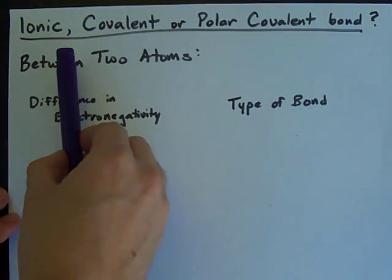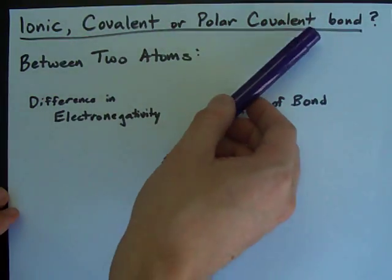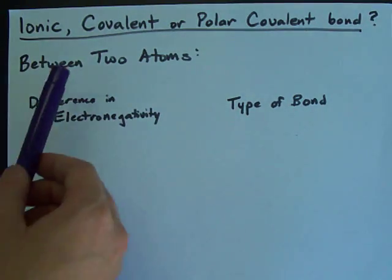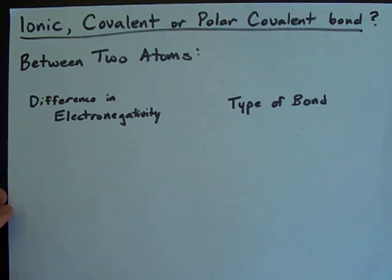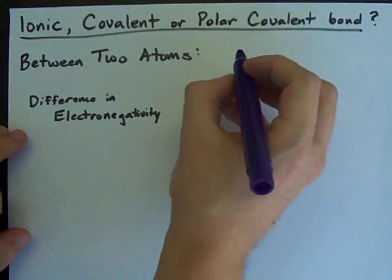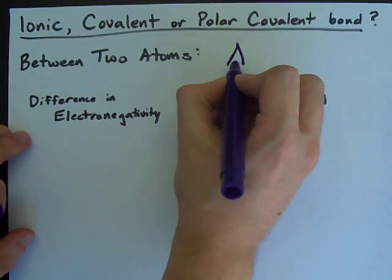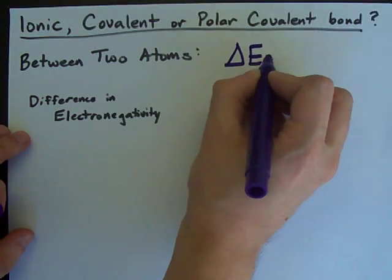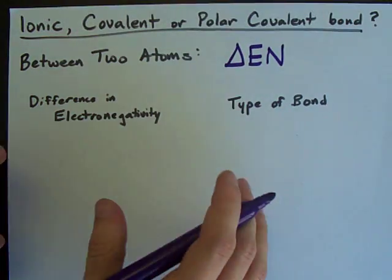You may be asked to figure out whether or not a bond between two atoms is ionic, covalent, or polar covalent. To do this, you're going to have to figure out what the difference in electronegativity is between the two atoms.